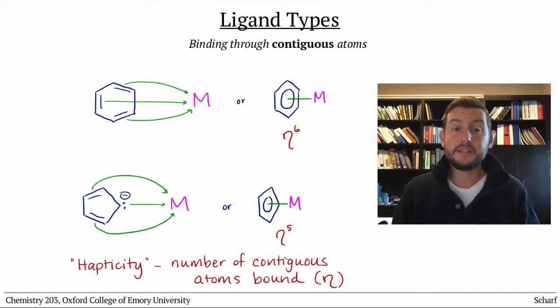You actually saw an example of this in lab when you worked with the acetylation of ferrocene. Ferrocene contains two eta V cyclopentadienyl ligands.